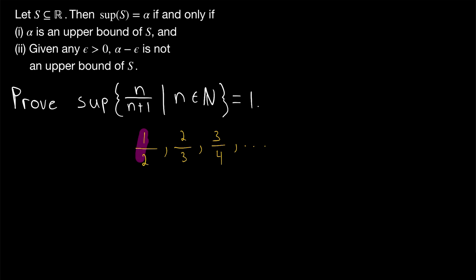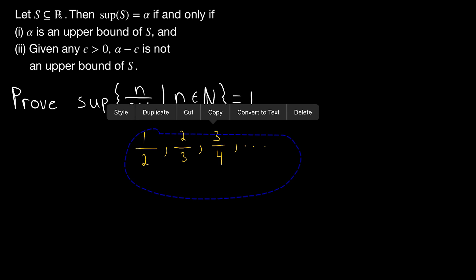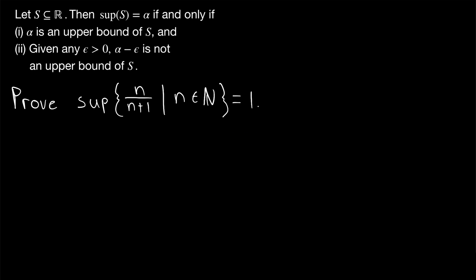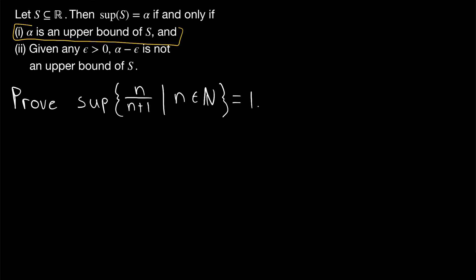Additionally, you might suspect that 1 half is the infimum of the set, which it is, and I'll leave that for you to prove. We'll go over it in a future lesson. So how are we going to prove that 1 is the supremum of the set? We're going to use this definition, so first we have to prove that 1 is an upper bound of the set.